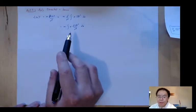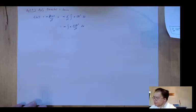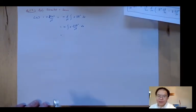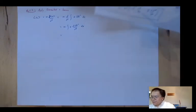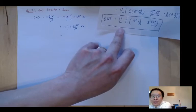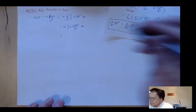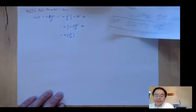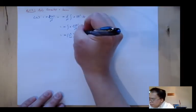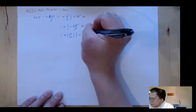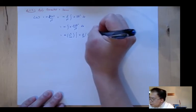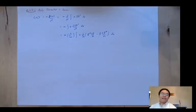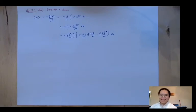Now this is where we can use our lemma. I'll pull the constants out front: we have m times i h-bar over 2m — and the m's cancel — giving us i h-bar over 2 times the integral of x · d/dx(psi* dpsi/dx minus psi dpsi*/dx) dx.